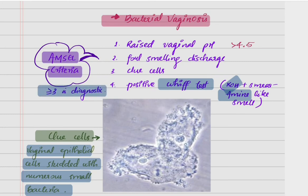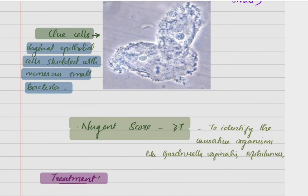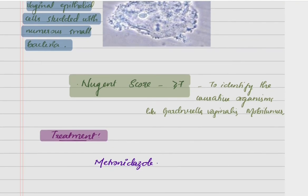Among those four points, if more than three are present, it is diagnostic of bacterial vaginosis. The Nugent score is used to identify the causative organism like Gardnerella vaginalis, Mobiluncus, or any other anaerobic bacteria causing bacterial vaginosis. If the Nugent score is more than seven, it is positive for that organism. For treatment, we use metronidazole.